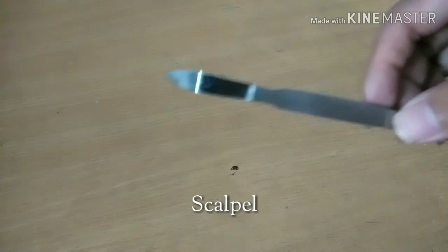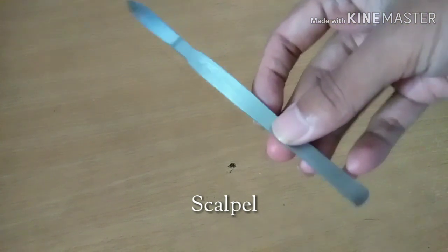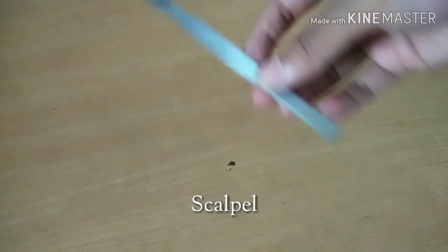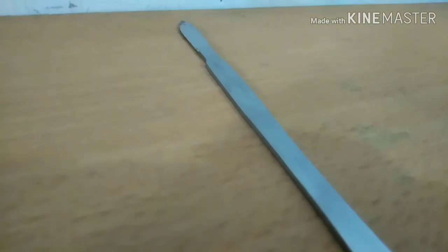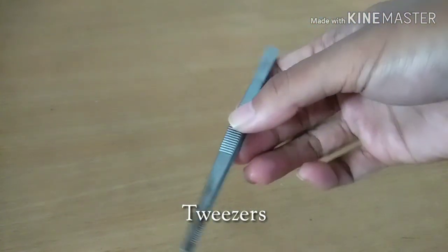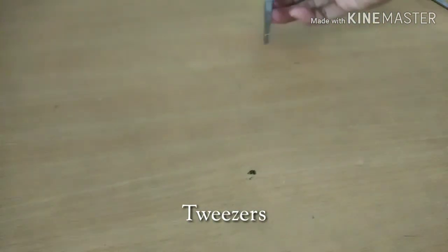Scalpel, to scrape onion membrane. Three, tweezers have a function to take an internal membrane of onion.